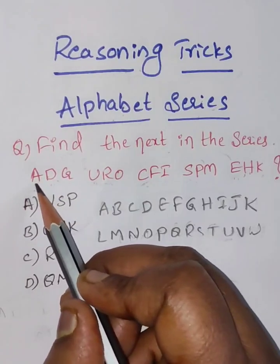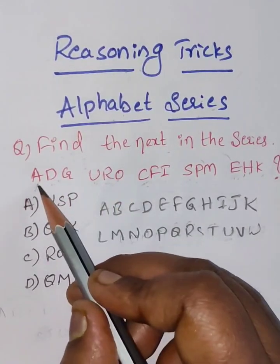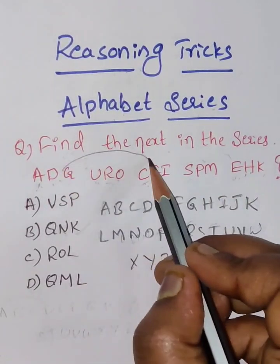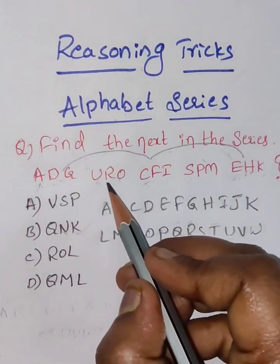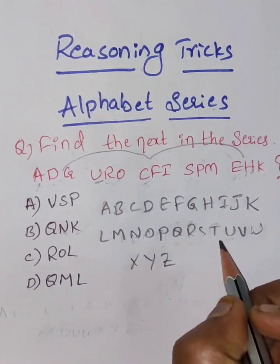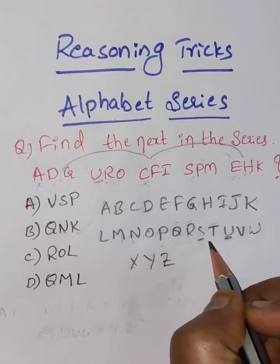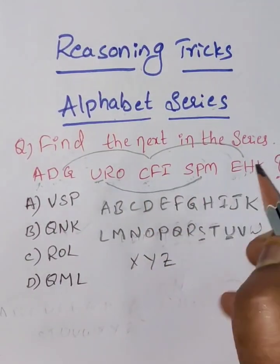See here A. If you leave this A, B is missing, C. D is missing, E. So these three are following one pattern. If you go here U, and the next is S, means here T is missing. So these two are following the same pattern.